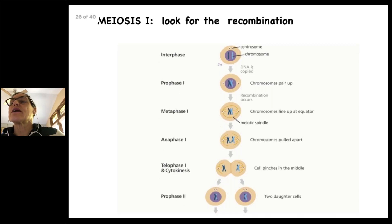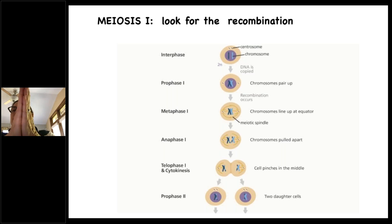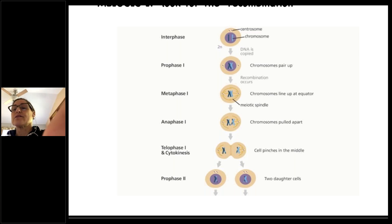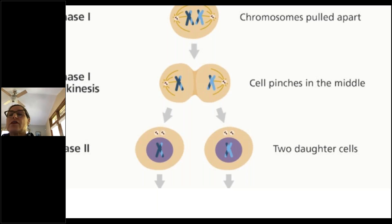In interphase you have your chromosomes. The DNA is copied in prophase one, then chromosomes pair up. In metaphase one, recombination occurs — the mixing and matching. Then the chromosomes line up just like in mitosis, metaphase in the middle. Anaphase: the chromosomes are pulled apart — notice the colors. Telophase: the cell pinches in the middle, then cytokinesis produces two daughter cells. But unlike mitosis, they're not identical — the DNA is a little bit varied.